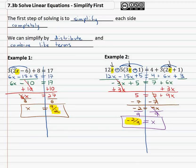The first step to solving simplify each side completely distribute and combine like terms on the left, distribute and combine like terms on the right, and then start solving the simplified equation by doing the same thing to both sides of the equation.